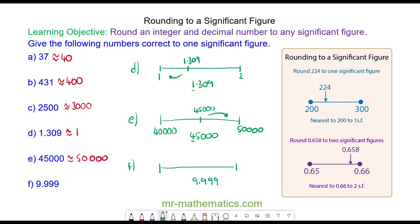For question F, it is between 9 and 10 because the 9 has the highest value, and 9.999 is very close to 10. So you can see it rounds up to 10 to one significant figure.